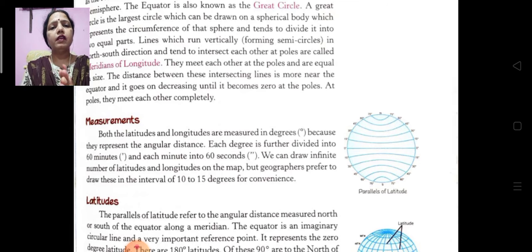Now here you can know about the measurements. Both the latitudes and longitudes are measured in degrees because they represent the angular distance. Each degree is further divided into 60 minutes, and each minute into 60 seconds. We can draw infinite number of latitudes and longitudes on the map, but geographers prefer to draw these in the interval of 10 to 15 degrees for convenience.